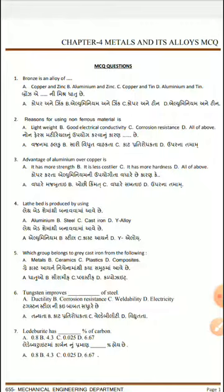First question: Bronze is an alloy of blank? The four options are: (a) copper and tin, (b) copper and zinc, (c) copper and zinc, and (d) aluminum and zinc.